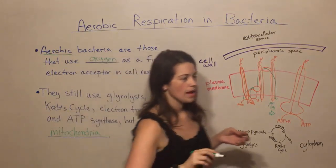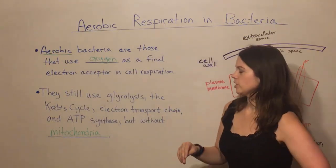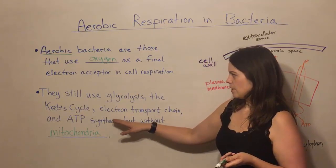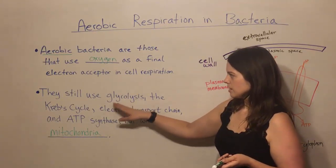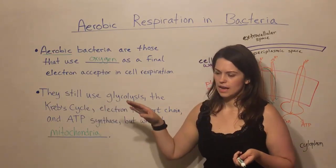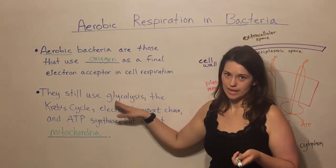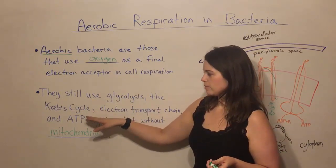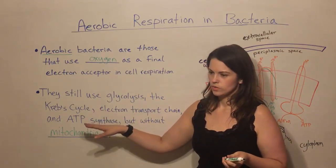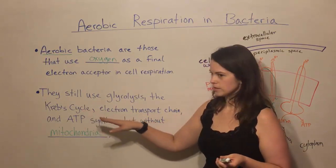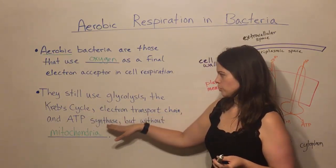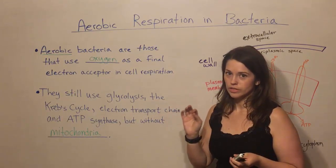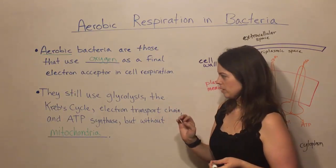If you can remember back to learning about aerobic respiration — which I have a video on if you're interested — glycolysis happens in the cytoplasm in human cells. Then pyruvate moves into the mitochondrion, and that's where the Krebs cycle takes place. The electron transport chain and ATP synthase are in those inner folds called the cristae of the mitochondria.